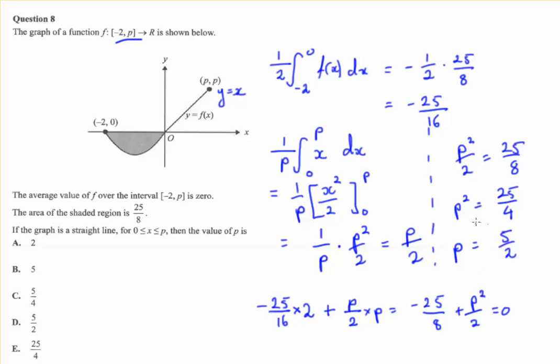Notice that p cannot be negative, so we can reject the negative root. And our answer is 5 over 2. So the answer is D.